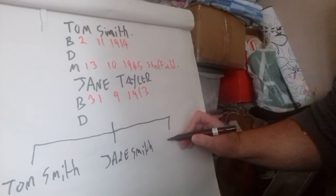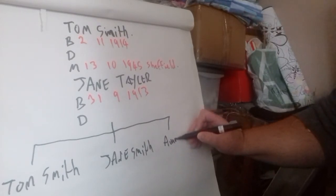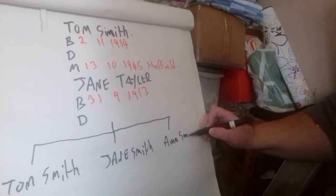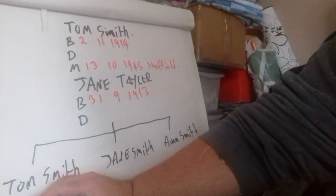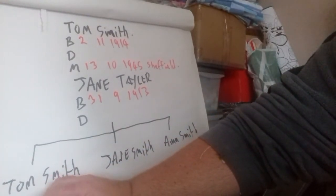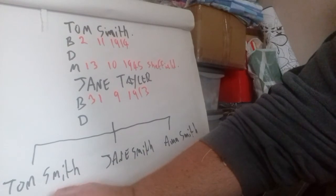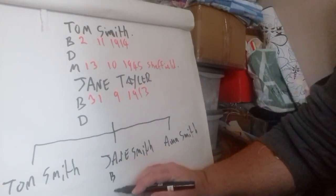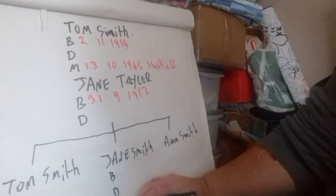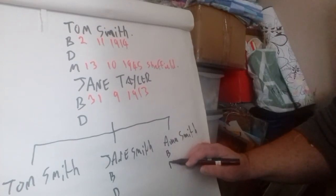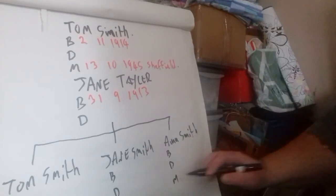And then I'm going to put Anne Smith. And again, for each child you put birth date, death date, and marriage. I'm not going to fill in the dates there.